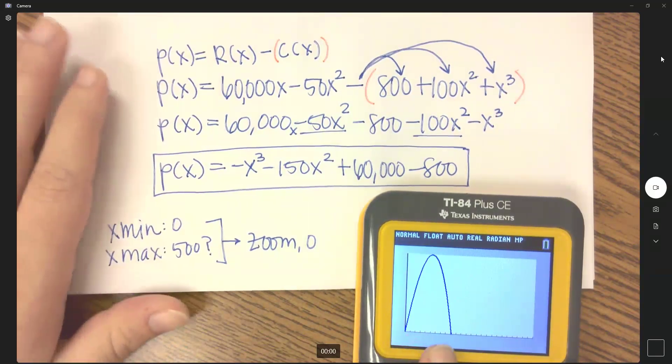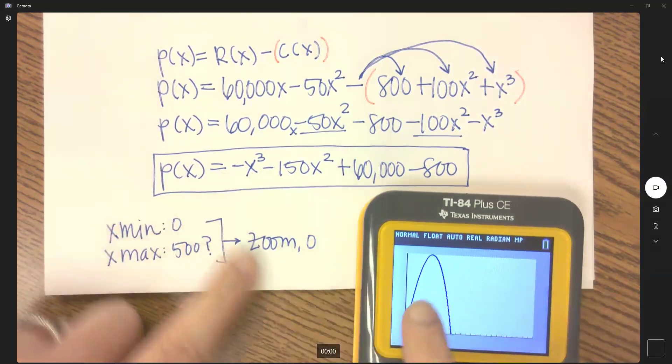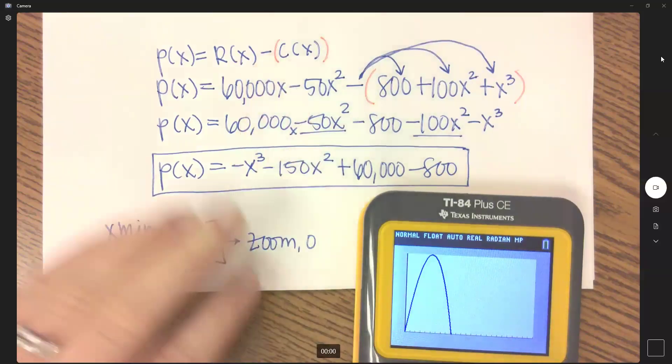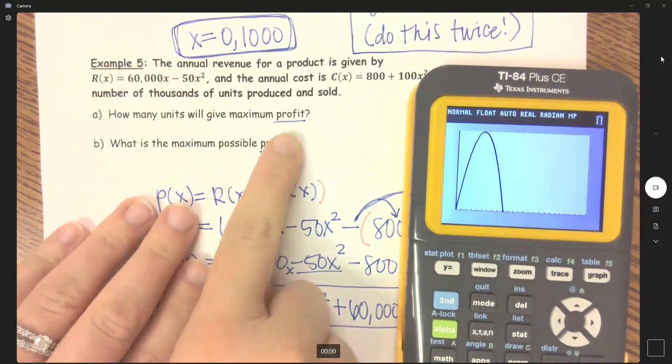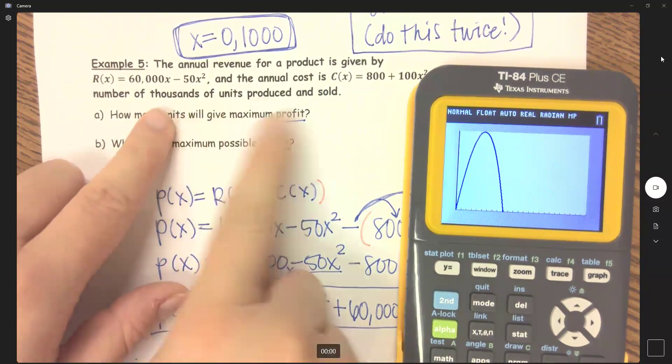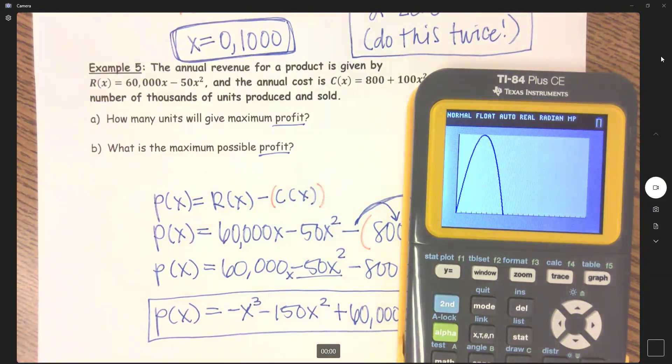Here, this looks like we have a quadratic, even though it is a cubic. So if I was to expand this out, it's negative, so it's going to come down this way and go up over here. But if this is my window, I'm wanting to find the maximum profit. How many units will give maximum profit? What is the maximum profit?